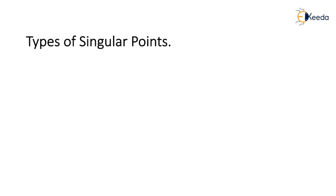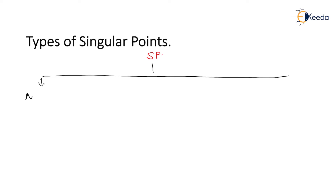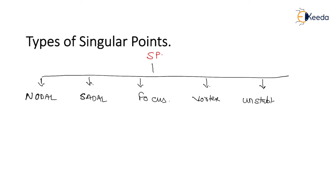Now there are 5 different types of singular points. So let us go with the tree diagram of different varieties of a singular point. I will bifurcate: the 1st is called as a nodal point, 2nd is called as a saddle point, 3rd is called as a focus point, 4th is called as a vortex point, and the last is unstable node.